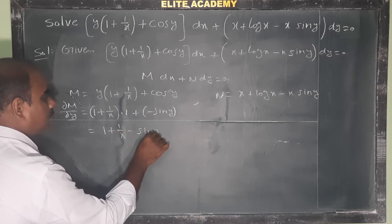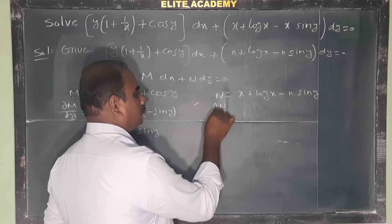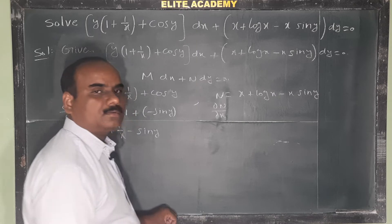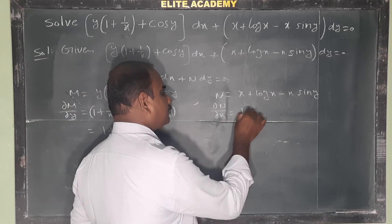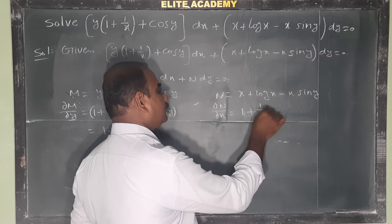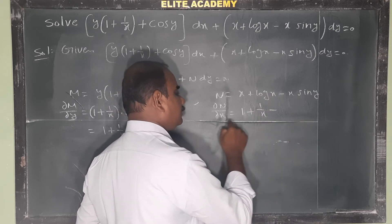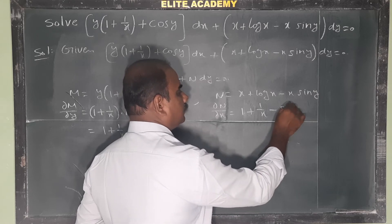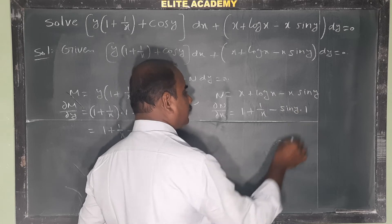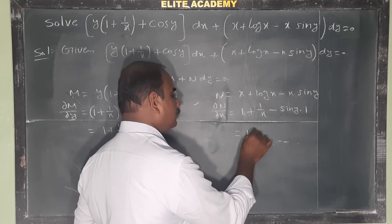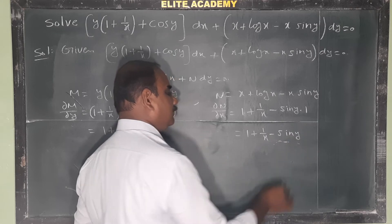For ∂N/∂x, differentiate N partially with respect to x. Derivative of x is 1, derivative of log x is 1/x, and for -x·sin y, sin y is constant with respect to x so derivative of x is 1. Therefore ∂N/∂x = 1 + 1/x - sin y.